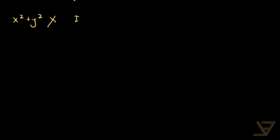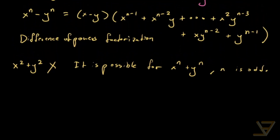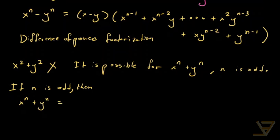So that means there is no general sum of powers factorization. But it is possible for x to the n plus y to the n where n is odd. And we can actually derive it directly from the difference of powers factorization, because if n is odd, then x to the power of n plus y to the power of n is equal to x to the power of n minus negative y to the power of n. This only works because n is odd.